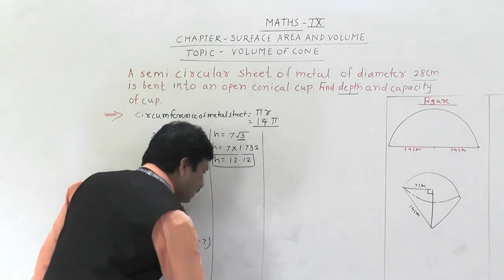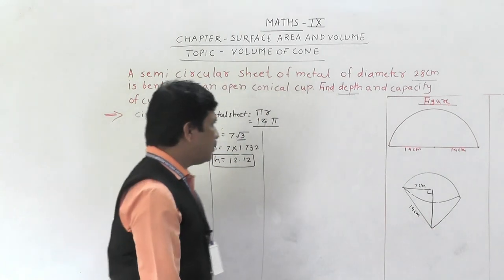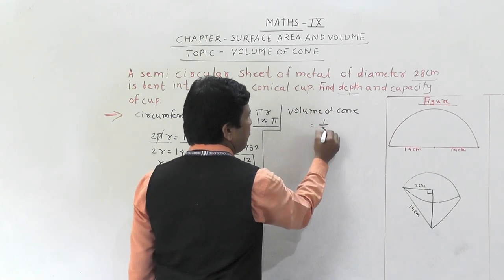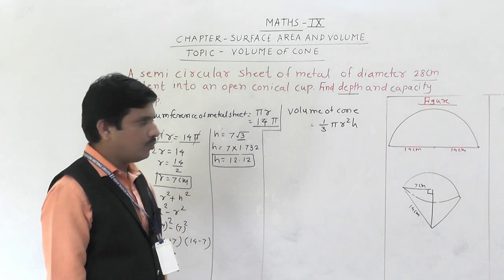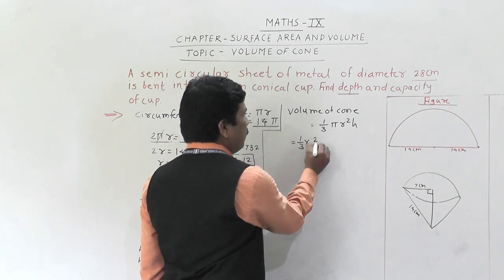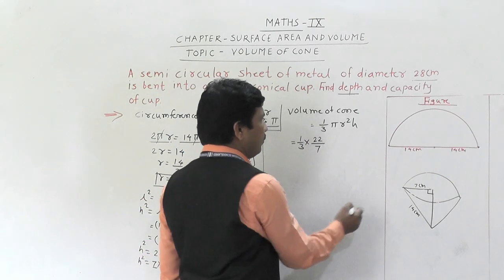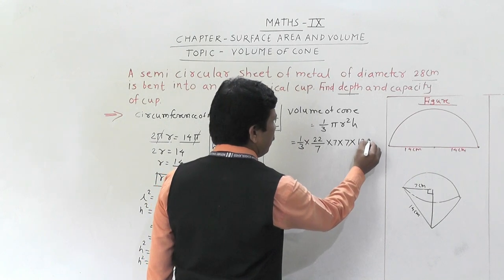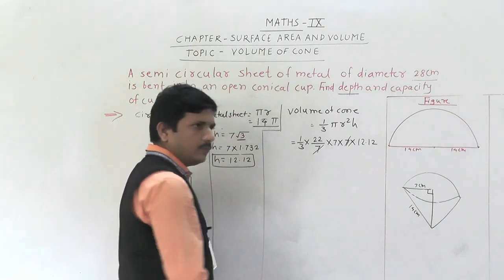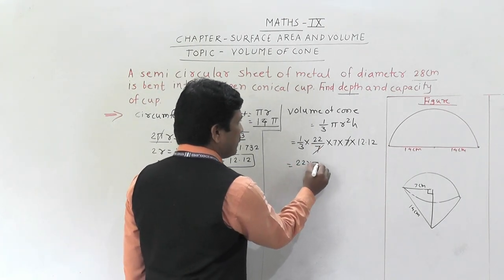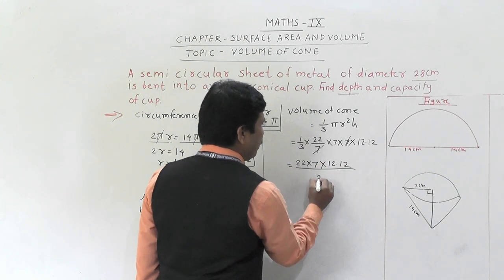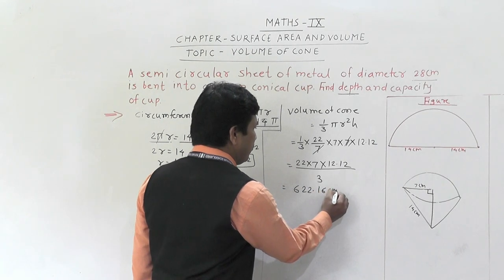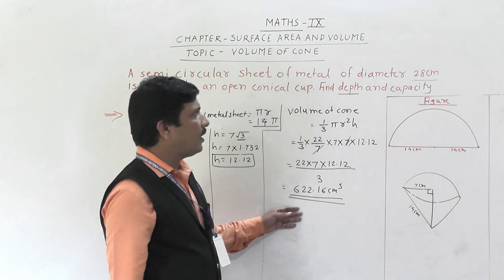The formula for volume of cone is (1/3)πr²h. Substituting: (1/3) × (22/7) × 7 × 7 × 12.12. The 7 in the denominator cancels with one factor of 7. We get 22 × 7 × 12.12 ÷ 3. Dividing 12.12 by 3 gives 4.04. So the product is 4.04 × 22 × 7 = 622.16 cubic centimeter. That is our final answer for capacity.